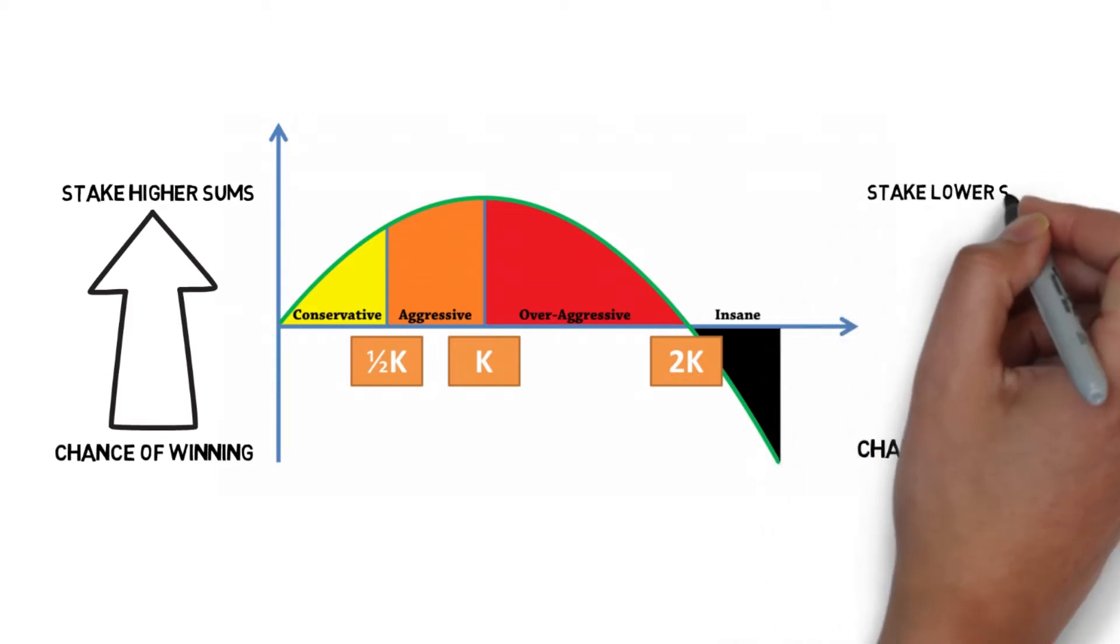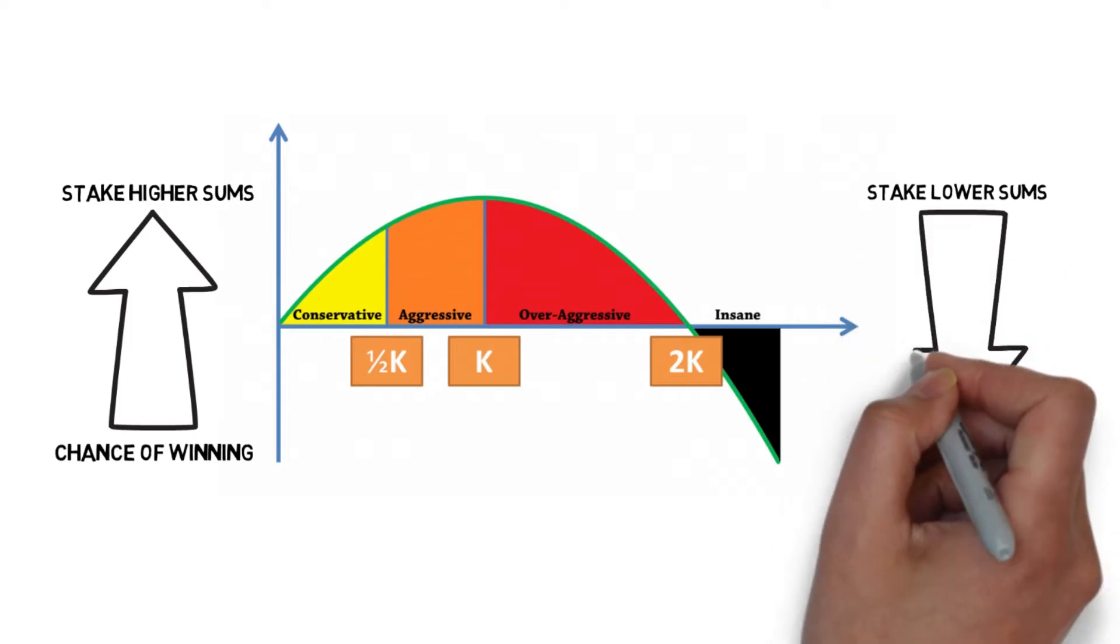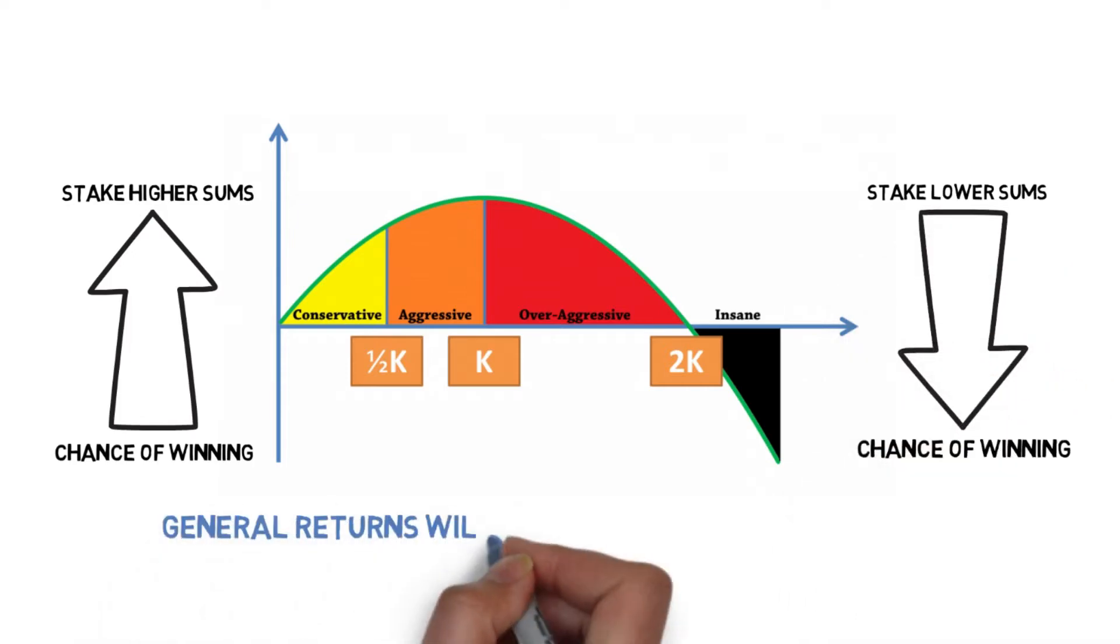And lower sums when setting bets that have a lower likelihood of winning. In principle, doing this could mean your general returns will be higher and losses lower.